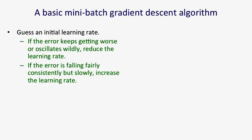You start by guessing an initial learning rate and you look to see if the network learns satisfactorily or if the error keeps getting worse or oscillates wildly. If that happens, you reduce the learning rate.